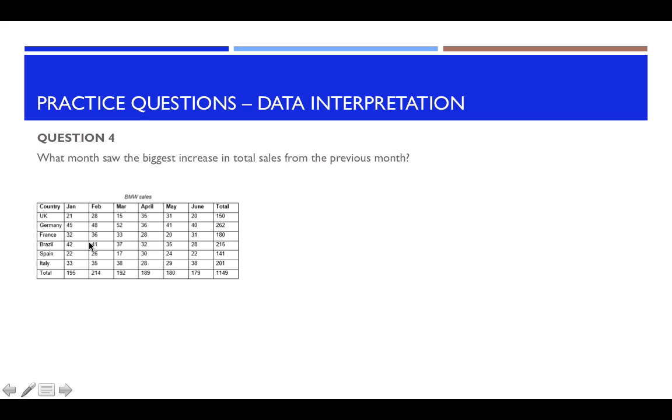So as you can see between January and February there is quite a big increase from 195 to 214. So that could be a possibility. So let's have a look at the others.